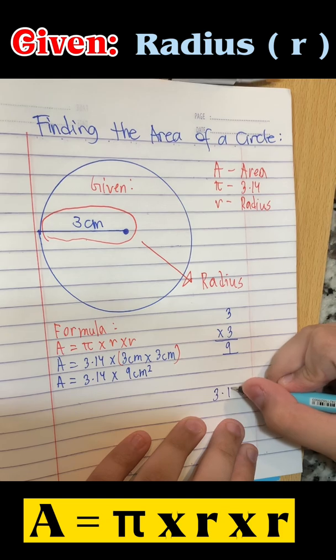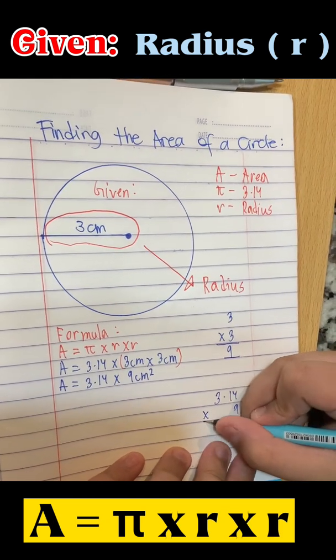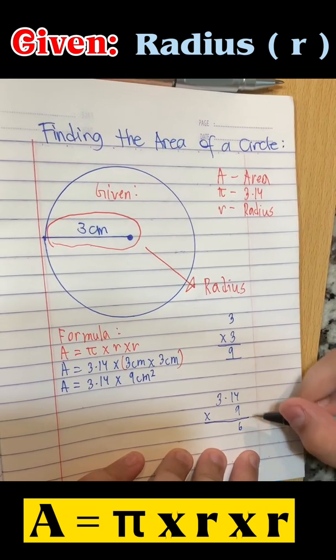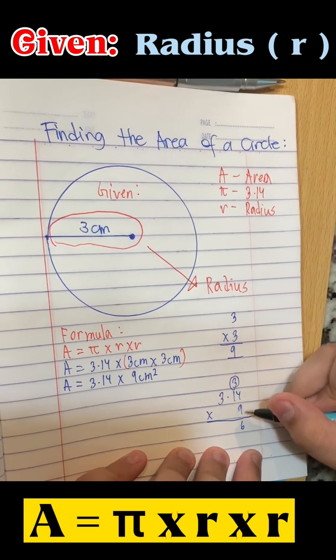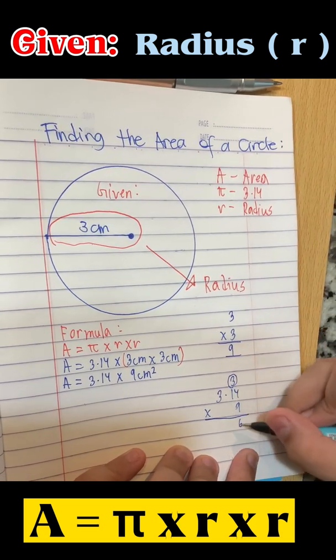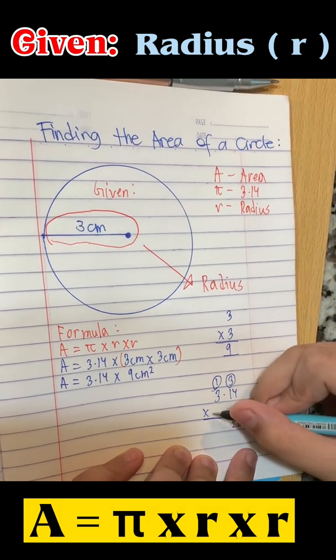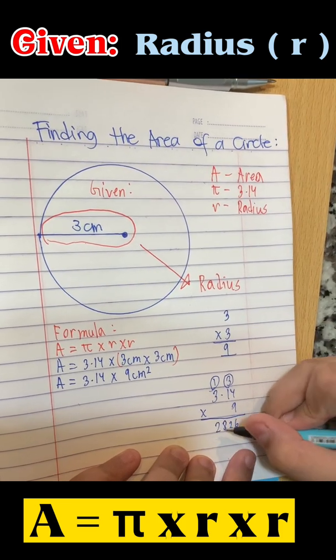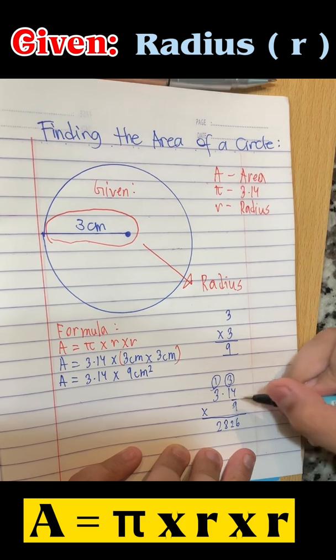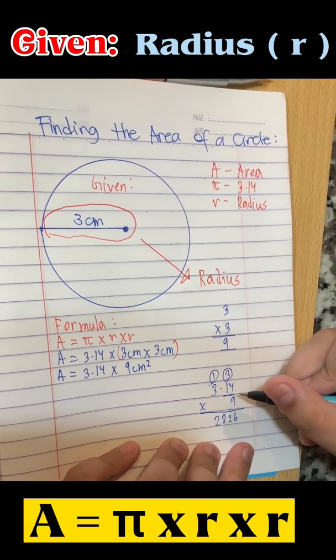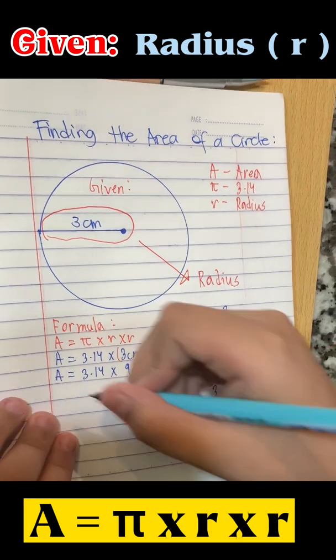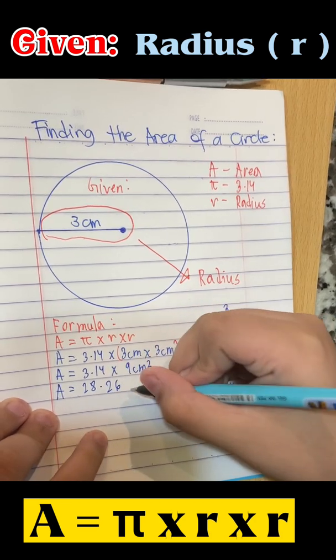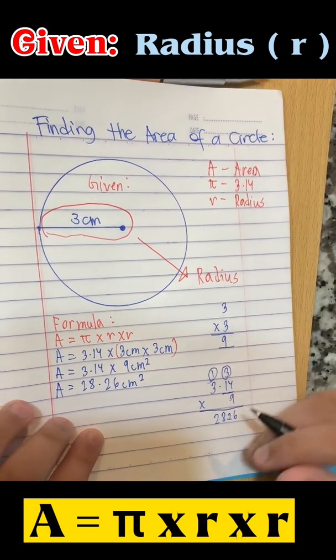3.14 times 9. 9 times 4 equals 36. 9 times 1 equals 9, plus 3 equals 12. 9 times 3 equals 27, plus 1 equals 28. Count the decimal places: 1, 2. Now, put the decimal point here. And there you have it, there's your area.